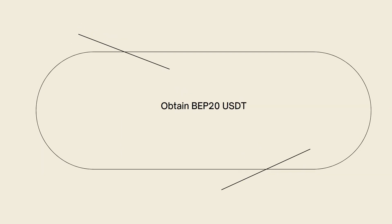Now obtain BEP20 USDT. First, you will need to acquire BEP20 USDT tokens. To do this, you can use a decentralized exchange like PancakeSwap, or a centralized exchange that supports BEP20 USDT. Follow the respective platform's instructions to purchase or swap your ERC20 USDT for BEP20 USDT.